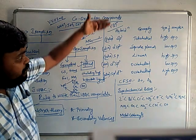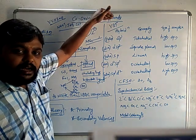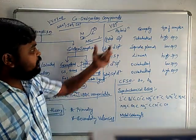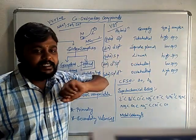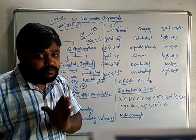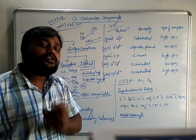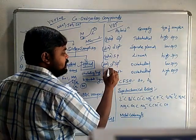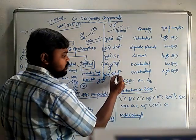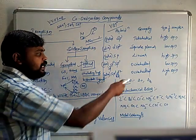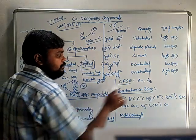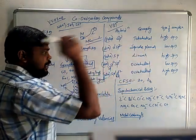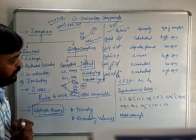Next is Valence Bond Theory (VBT), which is used to find hybridization and geometry of a complex. Using hybridization you can find the magnetic property of a complex. For example, if hybridization is sp³, you can determine the geometry and whether it is a high spin or low spin complex. If 'd' is the starting hybrid orbital (inner d orbital), it is a low spin complex; if 'd' appears last in the hybridization (outer d orbital), it is a high spin complex. You can also determine whether the complex is diamagnetic or paramagnetic.